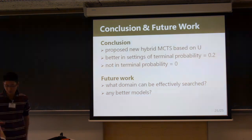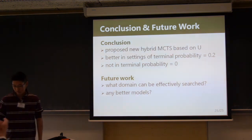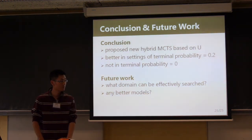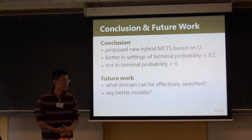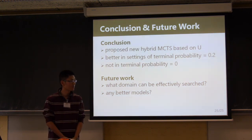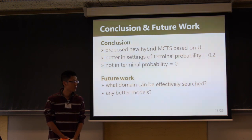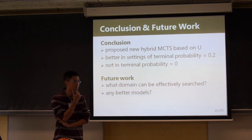Thank you. In the 1980s and early 1990s, there were two directions of research: conspiracy numbers and proof numbers. An audience member suggests that the proposed MCTS approach is not completely different from these conspiracy and proof number searches, and offers to discuss further during the break.